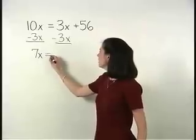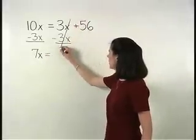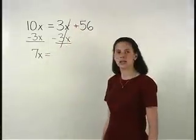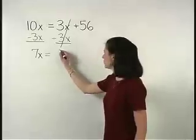and on the right side, our 3x minus 3x cancels out, and we're left with 56.